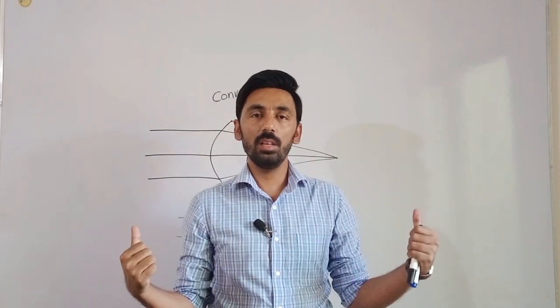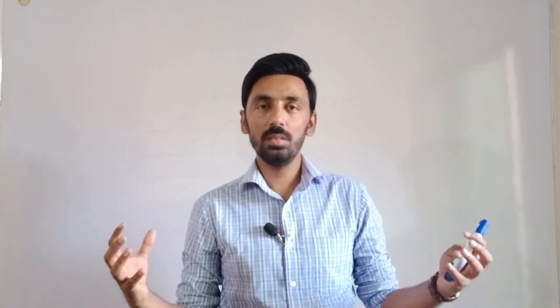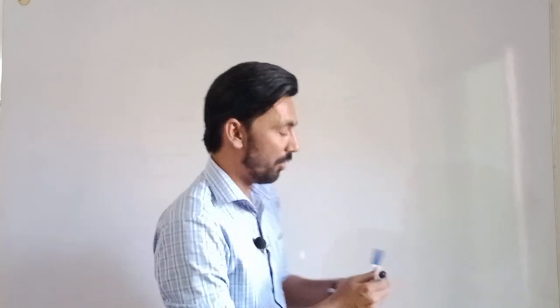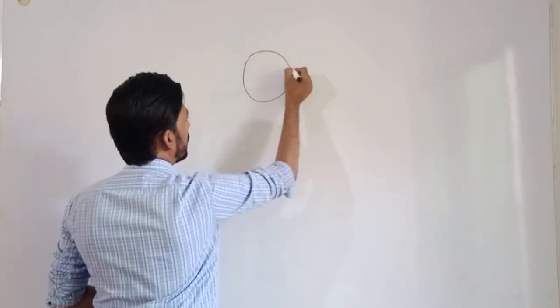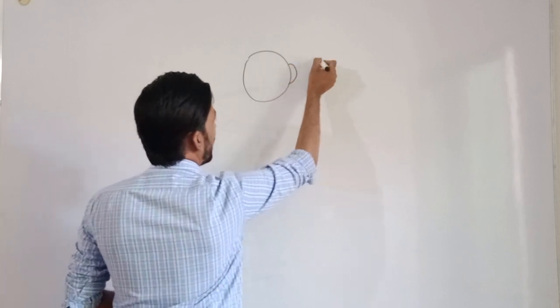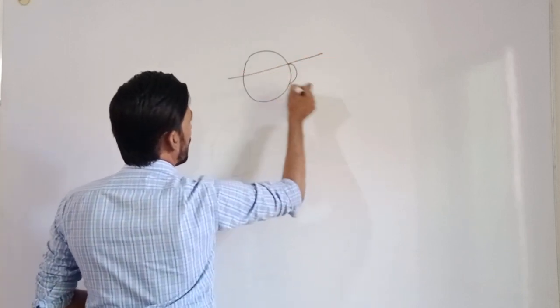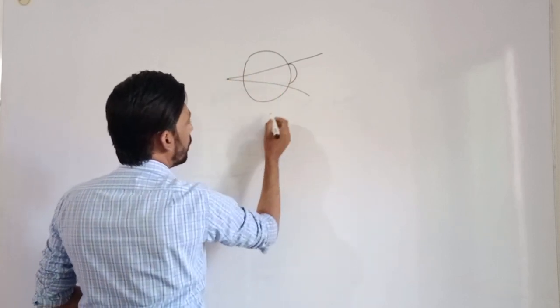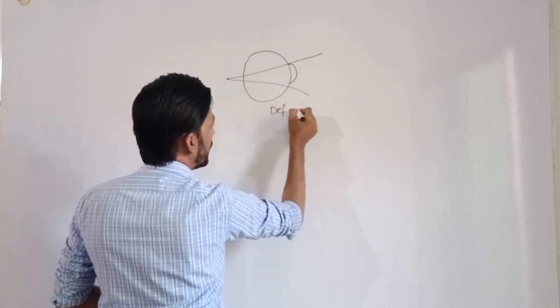A hyperopic patient is one who has deficient plus power in the eye. If the crystalline lens or cornea has insufficient plus power, the eye has deficient plus power. If I draw a hyperopic eye, the light rays will fall behind the retina due to this deficient plus power.